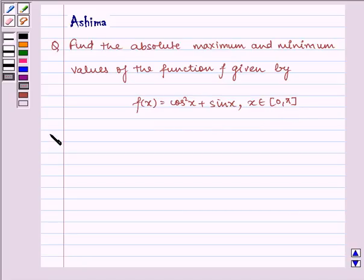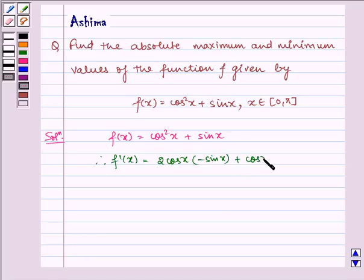Now let us proceed to the solution. Given to us f(x) equals cos²x plus sin x. Therefore, f'(x) equals 2cos x multiplied by negative sin x plus cos x.